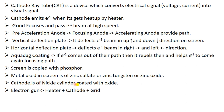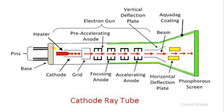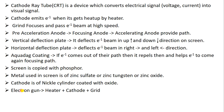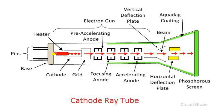The cathode is a nickel cylinder coated with oxide. And the electron gun consists of the heater, cathode, and grid — these three are also called the electron gun. Basically it is called the electron gun. Heater, cathode, and grid together — these three are called the electron gun.